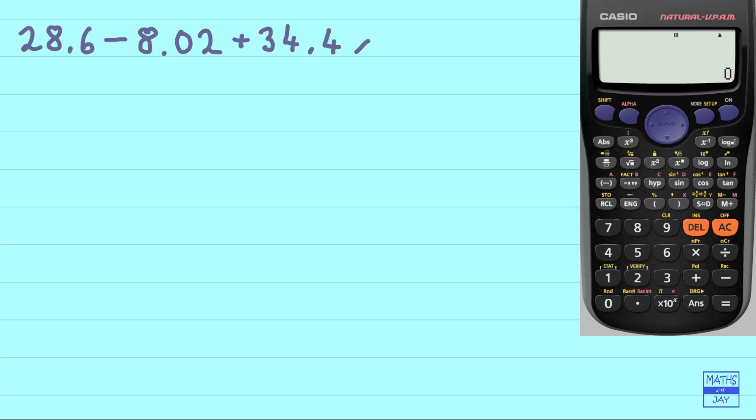So let's start off by inputting this calculation. Right, here I've made an error. I should have put a zero in before the two. So all I'm going to do is use the del key, del for delete, to delete the two and then just continue the calculation, continue inputting the calculation.